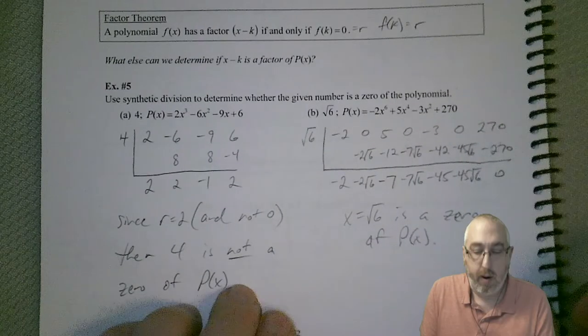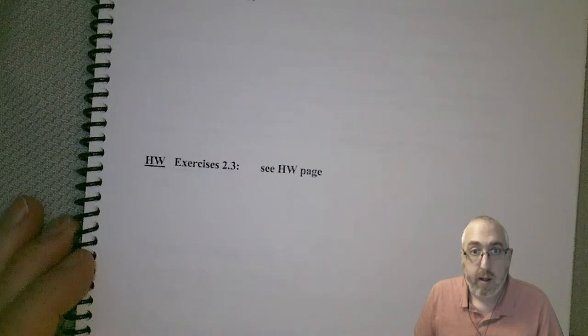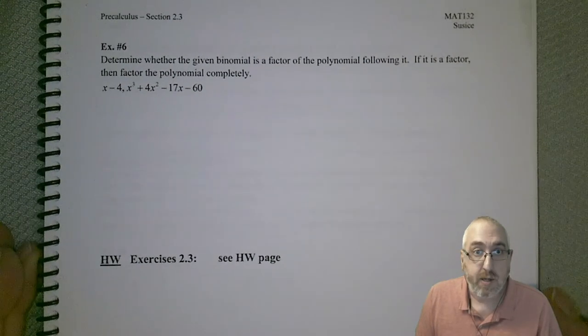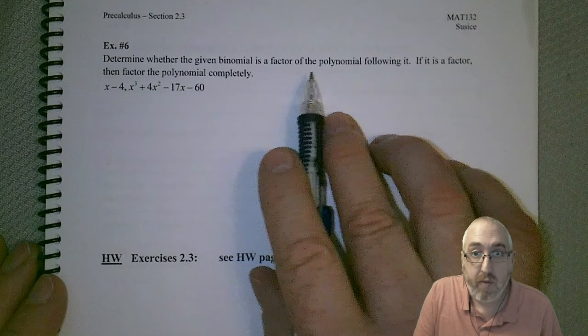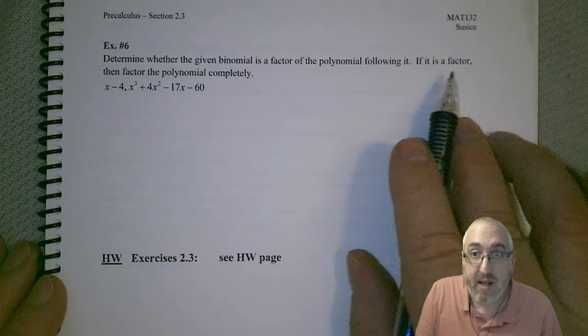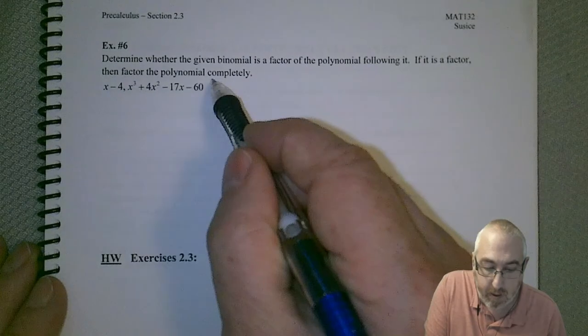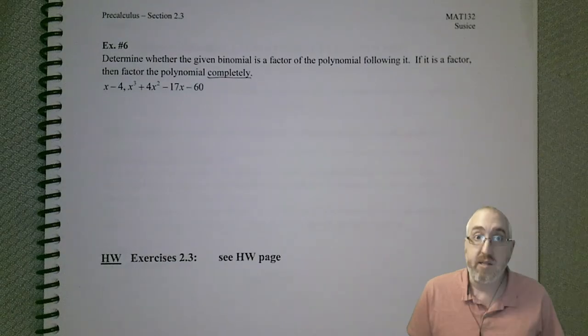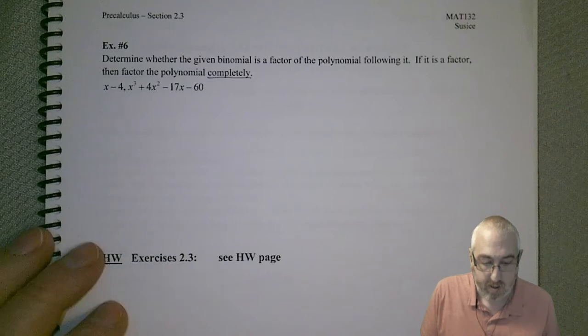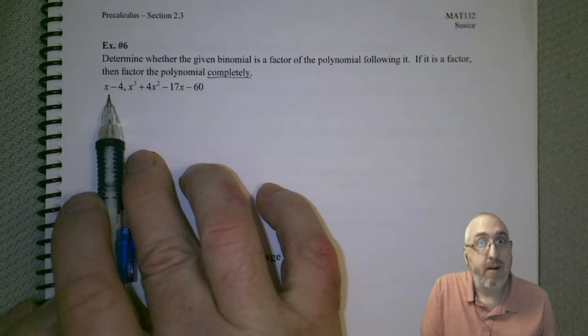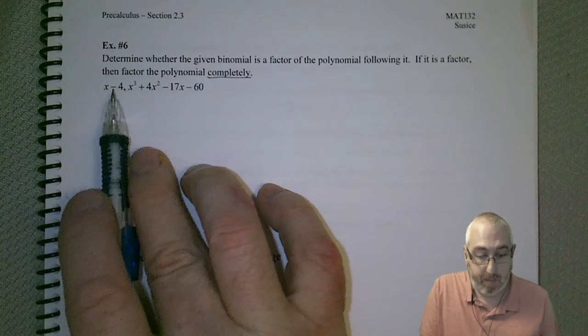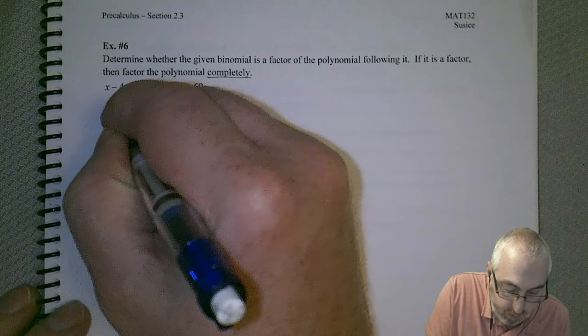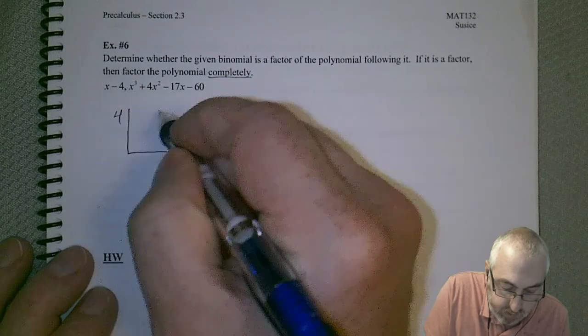So, all right, let's try one more, a little different problem. And that will wrap up this video and wrap up this section. So, determine whether the given binomial is a factor of the polynomial following it. If it is a factor, then factor the polynomial completely. So, this one's a two-phase problem. So, we first got to see if it's a factor or not. And if it is, then we've got to break it down all the way. So, remember, the easiest way when we have a factor of this type is to use synthetic division. Now, remember, this is in the form x minus k. So, in this case, k would be a positive 4. So, make sure you use the right sign on those values of k.